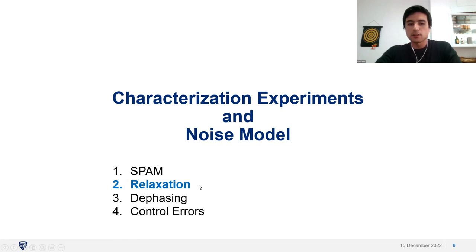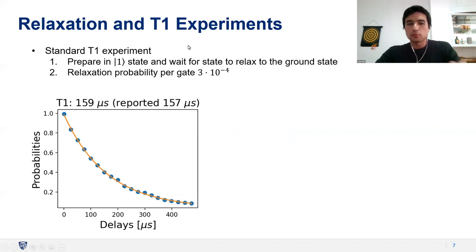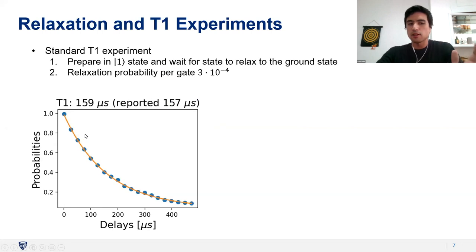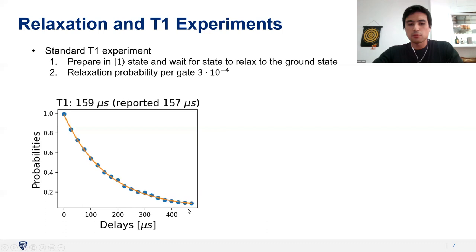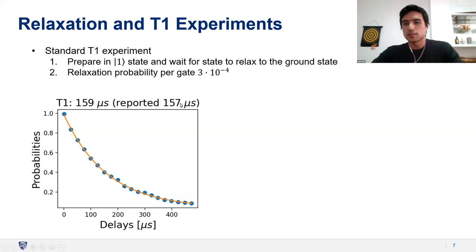Starting with relaxation noise, we perform T1 experiments: we prepare the qubit in the one state and wait for it to relax into the ground state, producing a familiar T1 relaxation curve showing the decay probability from the one state to the ground state. In one instance, the reported T1 time was 157 microseconds, and my experiment found 159 microseconds.